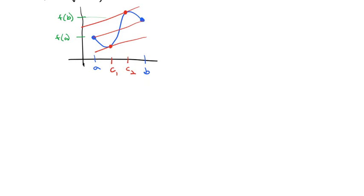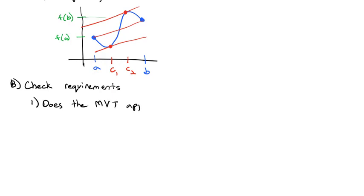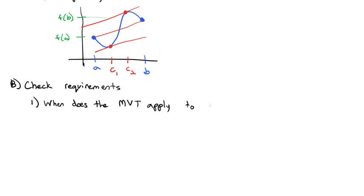It's always important to check the requirements of the mean value theorem: is it differentiable, is it continuous? We can ask: when does the mean value theorem apply to y equals the square root of x squared minus x minus 2?